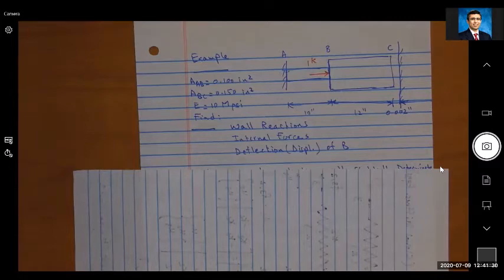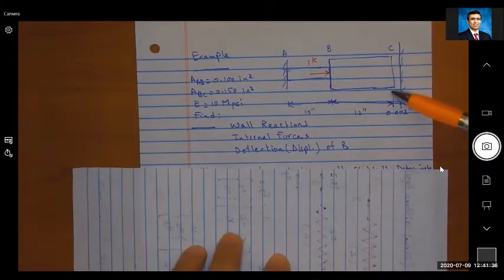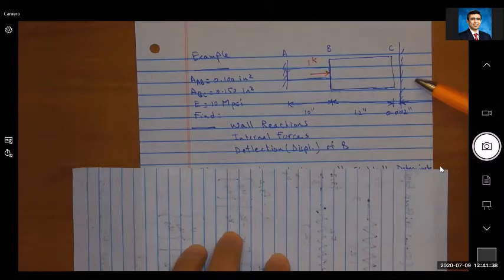If C is not going to touch the wall, I don't get the reaction from the wall and this would be a determinate problem, correct? But if C touches the wall, I get another reaction. So the first question is, is it going to touch the wall or not touch the wall? How do we figure that out?